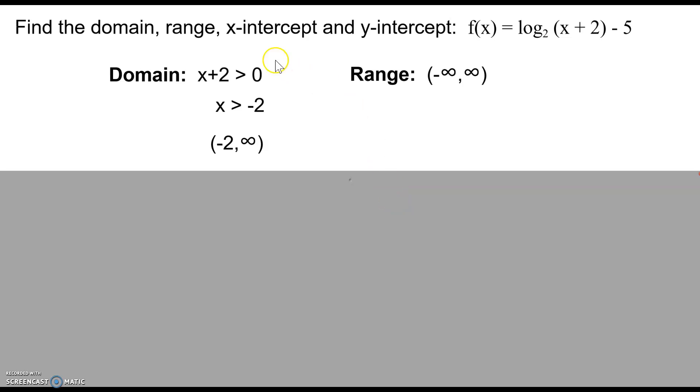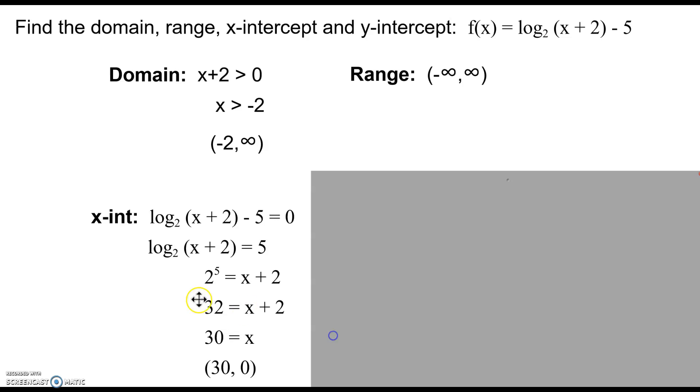The intercepts. Alright, so an x-intercept means I'm crossing the x-axis, which means the y value has to be 0. So in this case I don't have y but I have f(x) which is the same thing. So I would set my logarithmic function equal to 0 and then begin to solve. Add the 5 and then you might wonder, well what do I do?